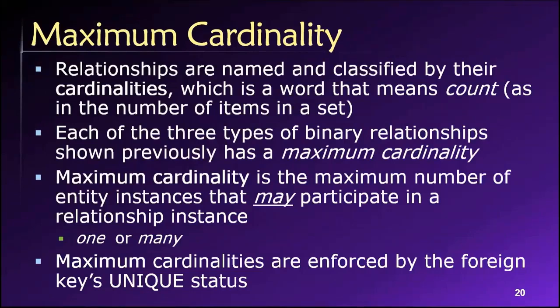At this point we can move beyond the conceptual relationships illustrated in the past several slides and enhance our capabilities by learning about cardinalities. We'll enhance our ability to convey design information and gain a more subtle database design capability. When we look at the relationship between two entities, that relationship is typically named, classified, or described by its cardinalities. Cardinality is a word that means count — the number of items in a set, coming out of set theory — and here we use it to refer to the number of entity instances allowed to participate in a relationship.